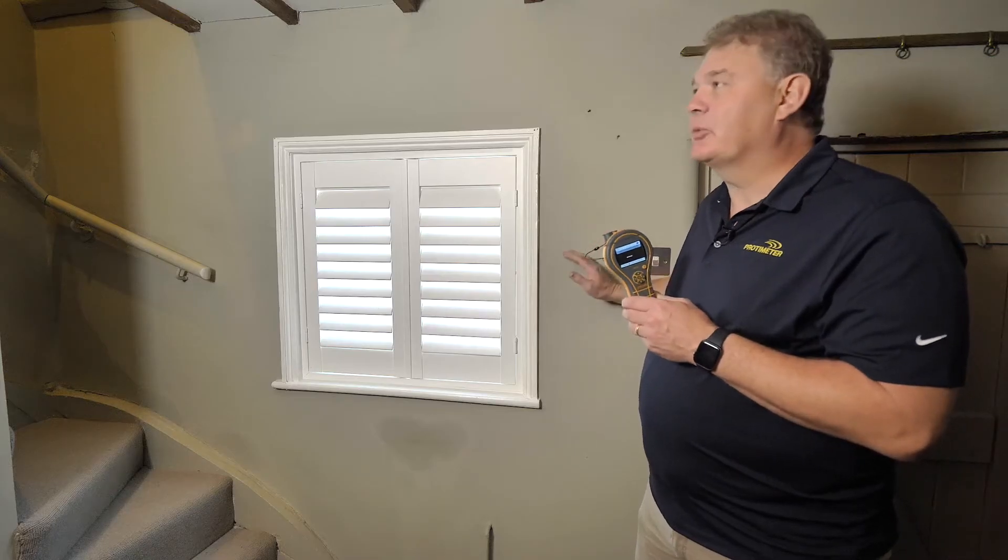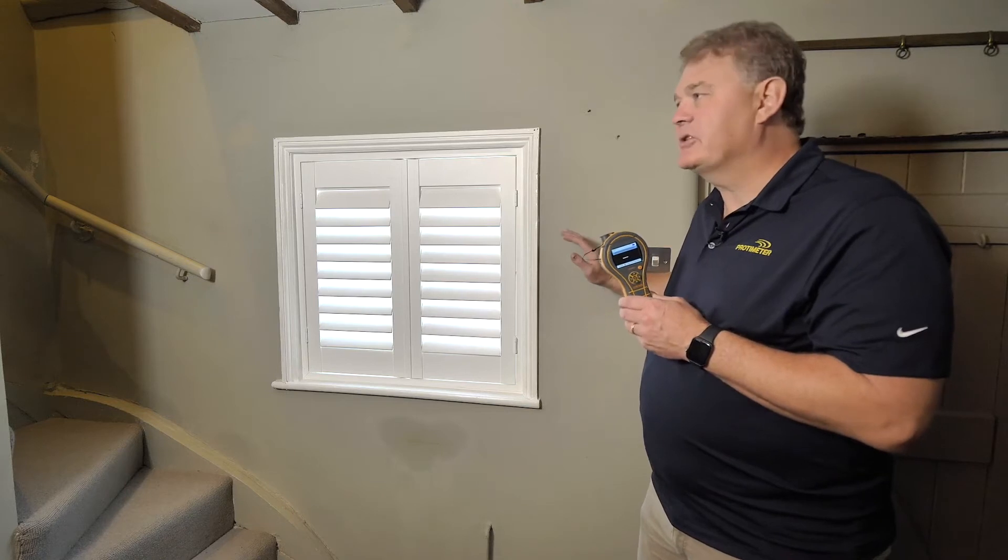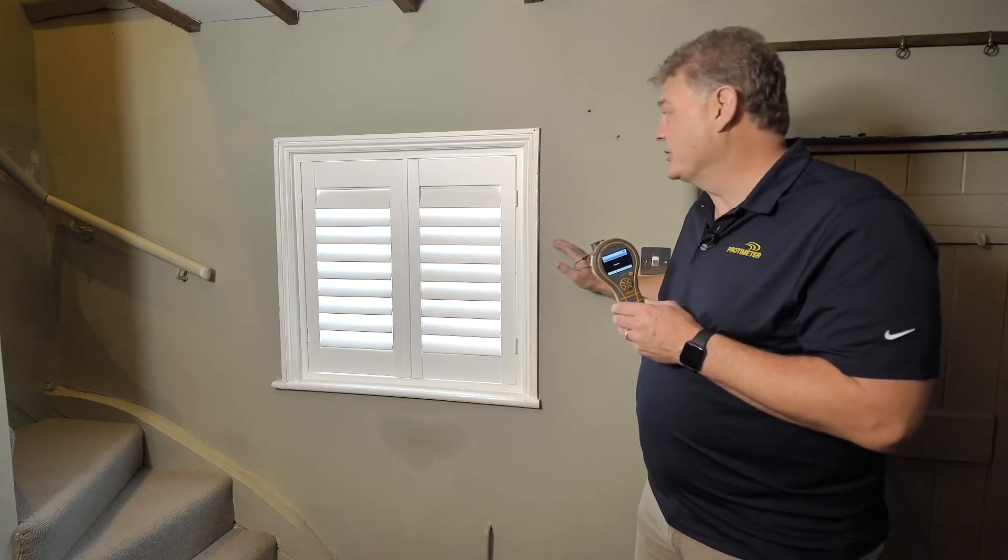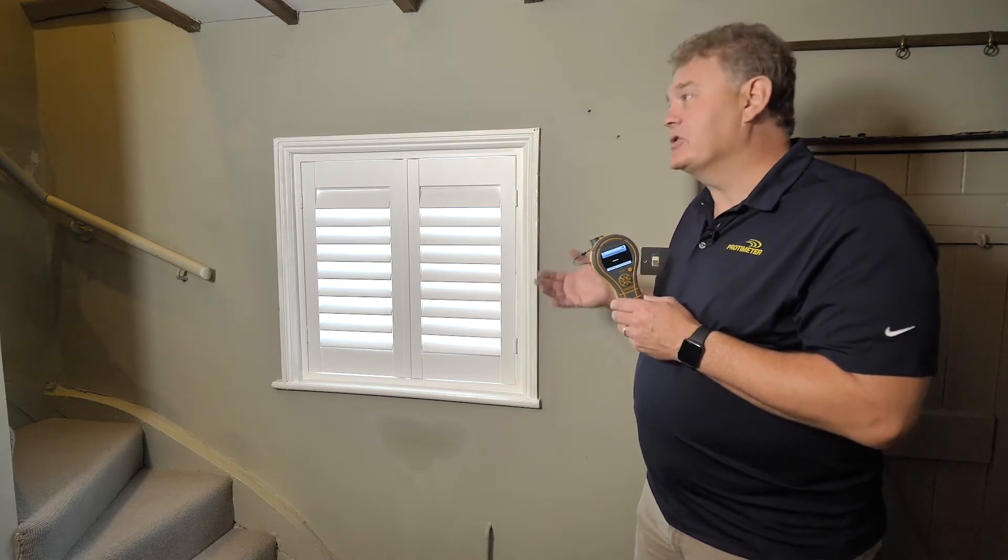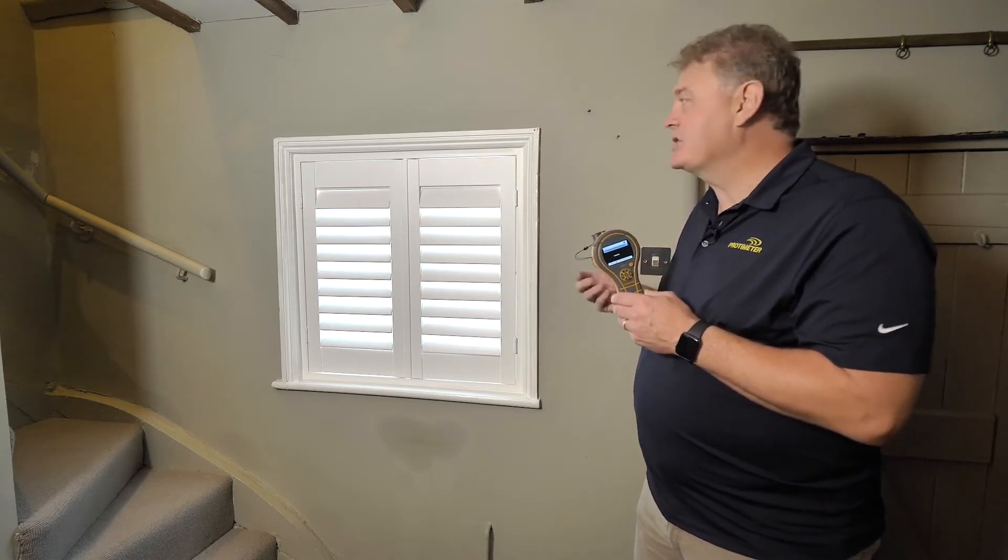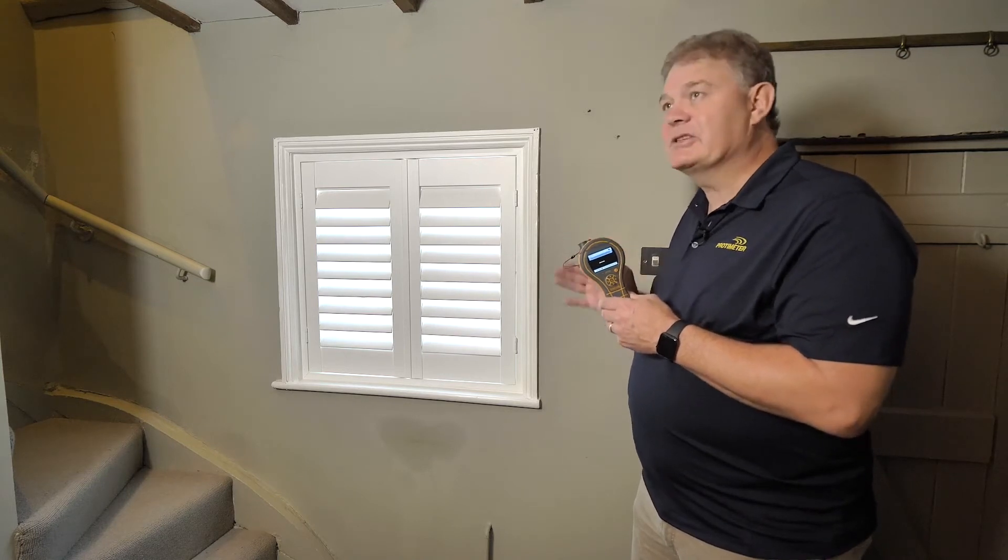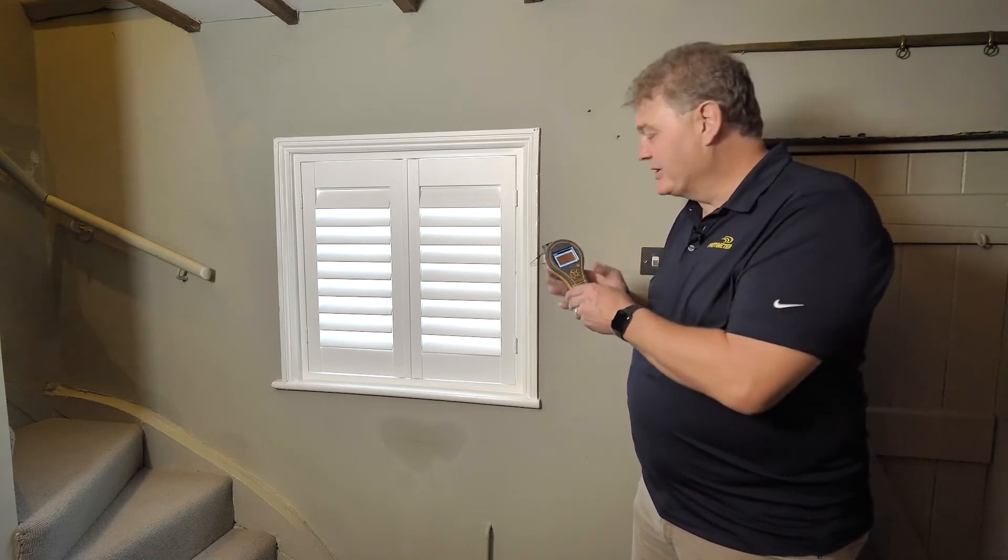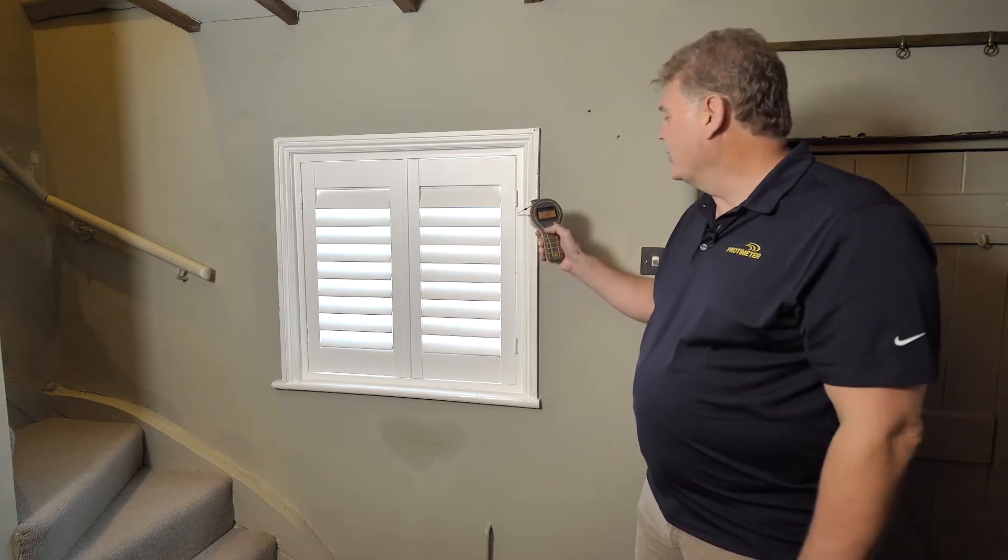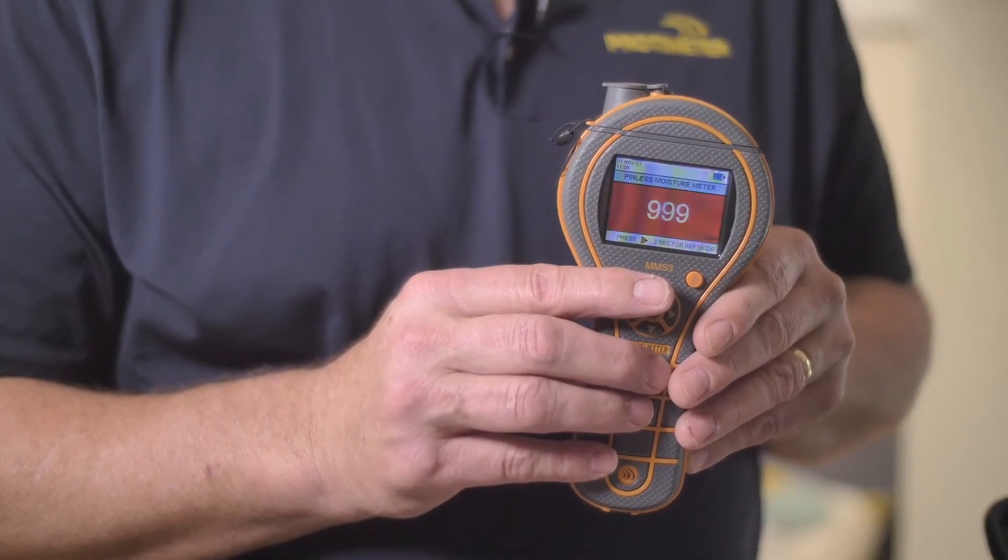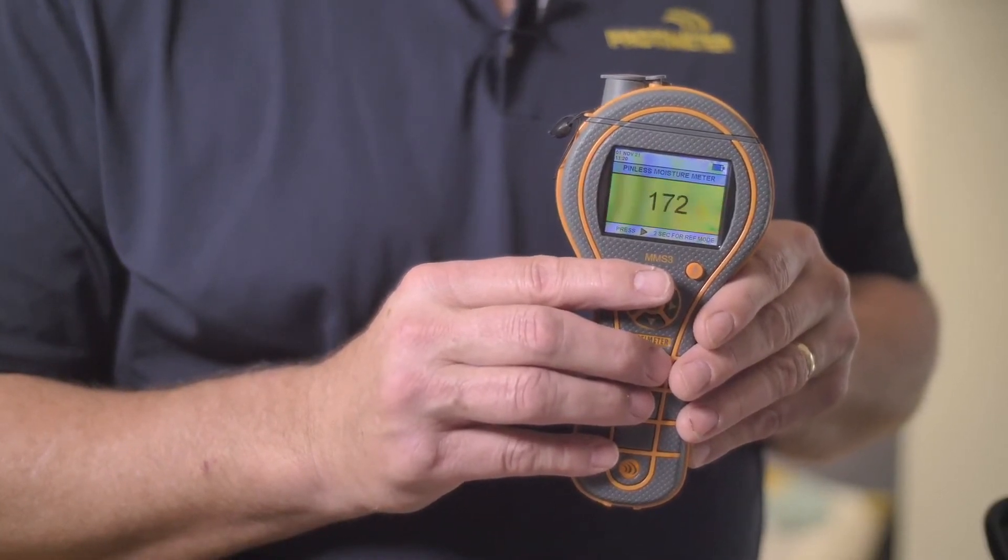Now let's use the MMS3 in a real-life situation. This building has brick and plaster construction, but the same techniques could be used in drywall and studwall construction. The first thing we want to do is quickly establish any potential high moisture areas. For this, the best mode to use is the non-invasive mode. This can be found on the menu, and you can check that the meter's fine by putting your fingers on the back.